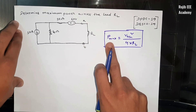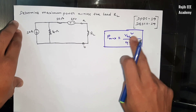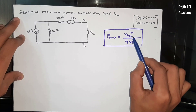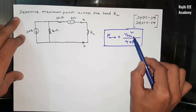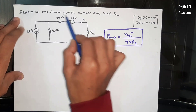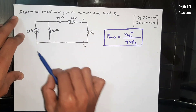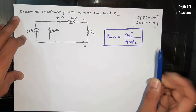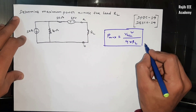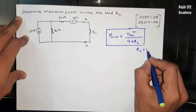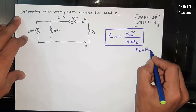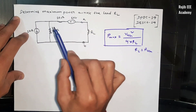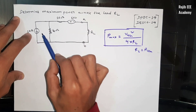P maximum is equal to VTH squared divided by 4 into RL. The AB terminal voltage is VTH, and for maximum power transfer the condition is RL is equal to RTH. So the equivalent circuit is VTH and RTH.